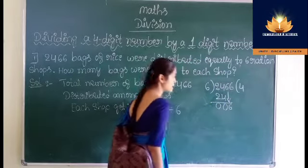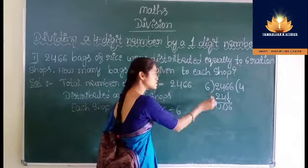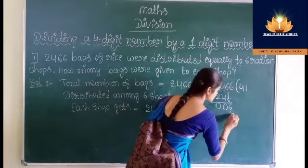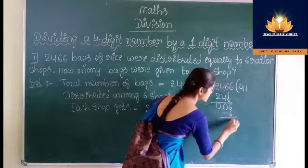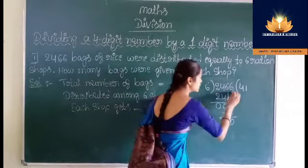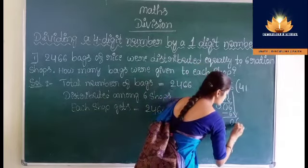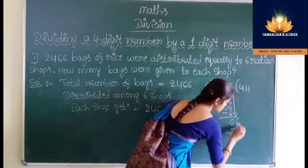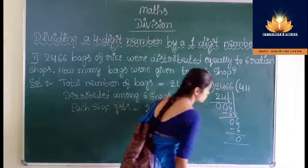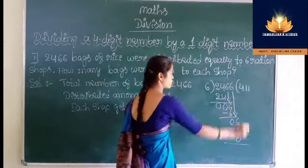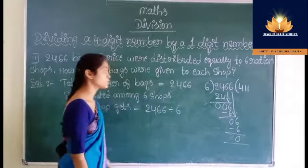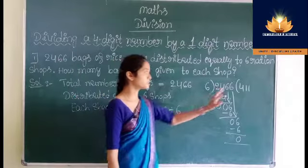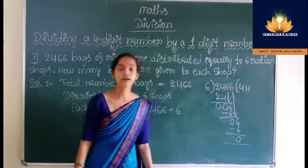6 is exactly divisible by 6: 6 ones are 6. 6 minus 6 is 0. Again bring down the next 6. 6 ones are 6, 6 minus 6 is 0. So we get 411 as a quotient. Each shop gets 411 bags of rice.